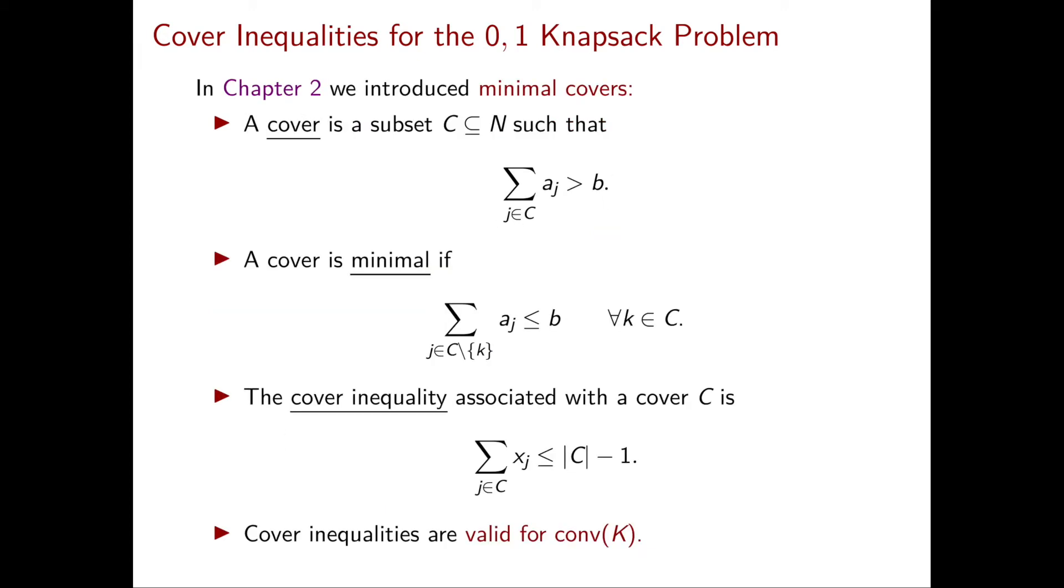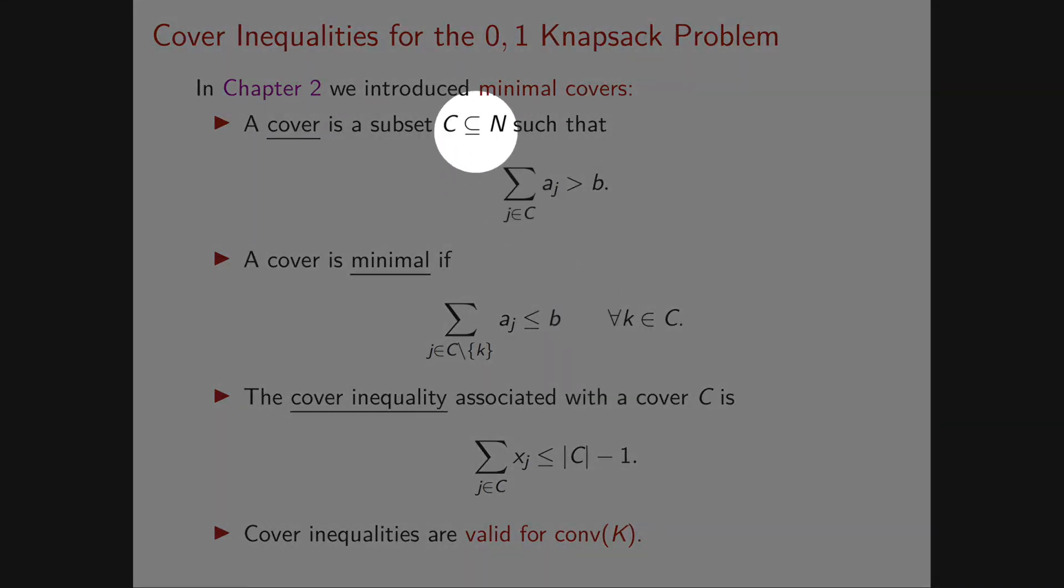In Chapter 2, we discussed minimal covers. A cover is a subset of items such that you cannot carry all of them at the same time. In formula, the sum of all the aⱼ for j in C is strictly larger than b.